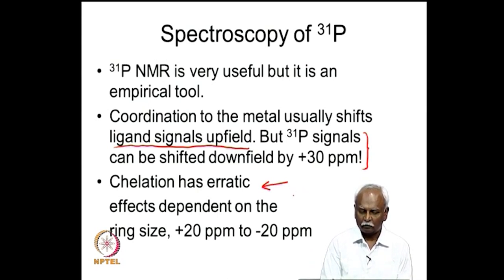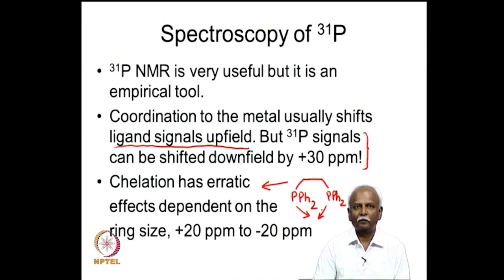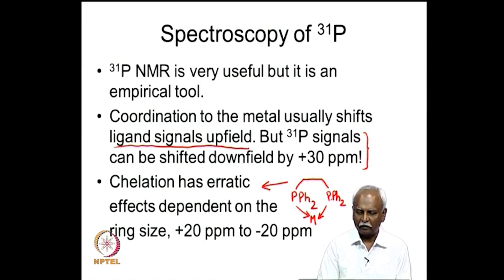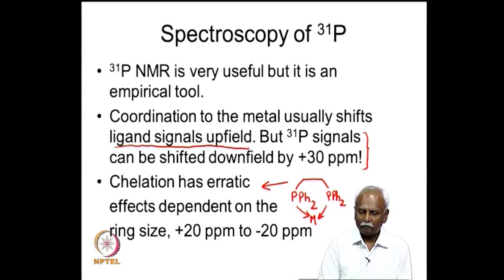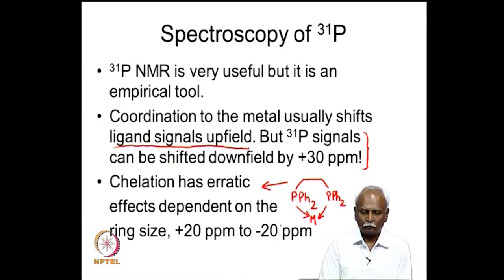There is another erratic behavior of ³¹P signals: if you have a chelated molecule — for example, diphenylphosphinoethane, which coordinates to the metal through two phosphorous centers forming a chelate ring — depending on the chelate ring size, the shift can be +20 ppm for a 5-membered ring, whereas if you have a single carbon bridge the shift is −20 ppm. Because of this erratic behavior, it sometimes becomes difficult to interpret the NMR spectrum of phosphorous-metal complexes, but with prior knowledge it turns out to be an extremely useful tool.